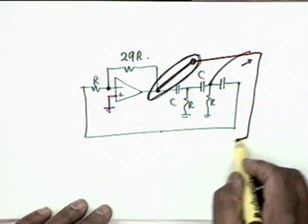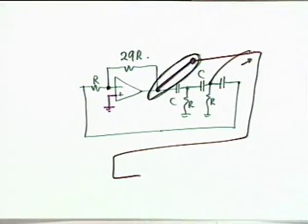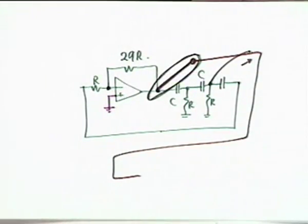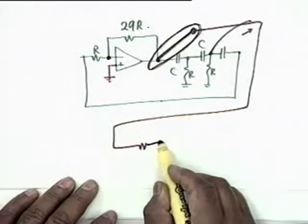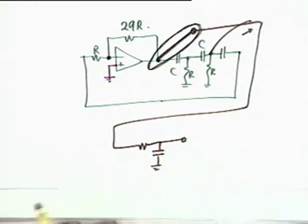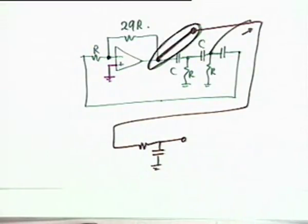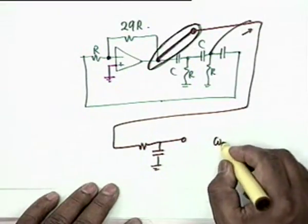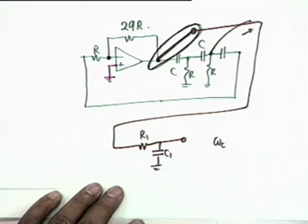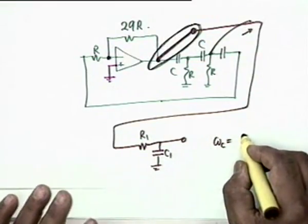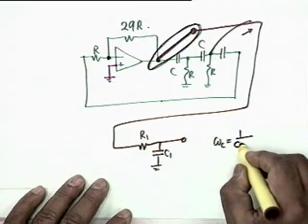There will always be some harmonic distortion — higher frequency components. One simple way of reducing distortion is to use a low-pass filter at the output. Use a simple RC circuit with R₁ and C₁, where the 3 dB cutoff ω_C = 1/(R₁C₁) is set slightly greater than ω₀, such that at 2ω₀ the attenuation is at least 20 dB (a factor of 10 reduction).